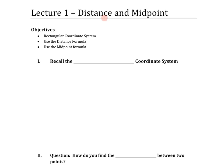In this lecture we're going to be taking a look at the rectangular coordinate system. Once we understand how to plot points, we're going to find the distance between two points and then find the midpoint of a line segment that connects those two points. Let's begin by refreshing our memory on what the rectangular coordinate system is.